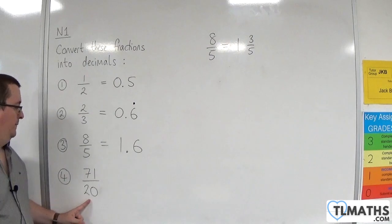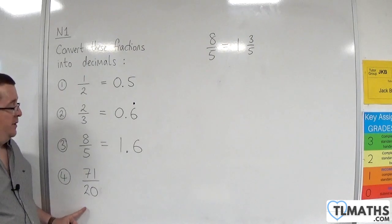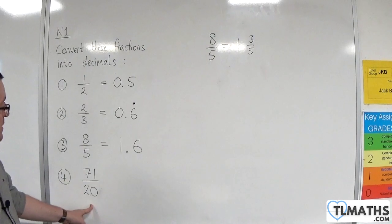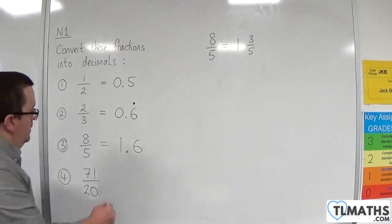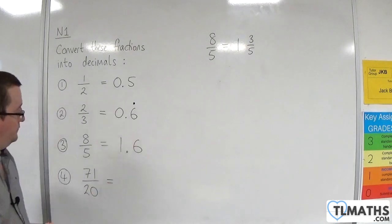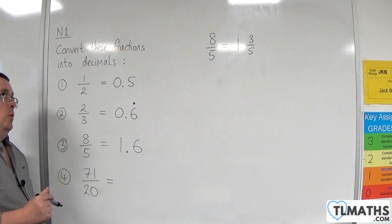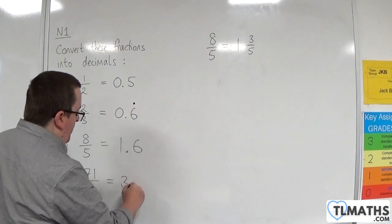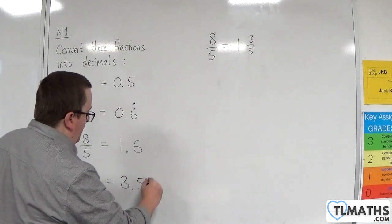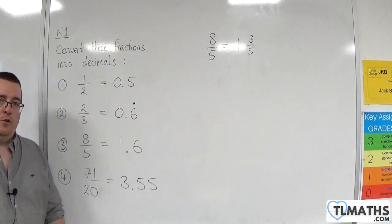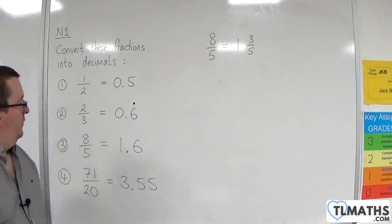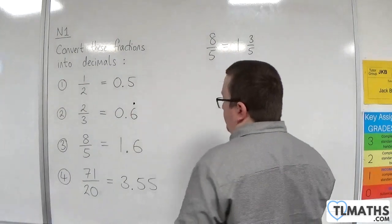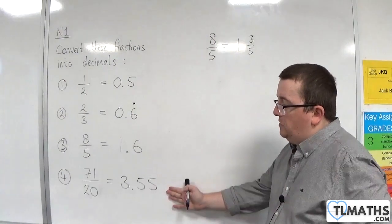Right, last one. 71 over 20. So, 71 divided by 20. So, you should get, what would that be? 35.5, so 3.55. OK? Doing that quickly in my head. So, 3.55. Another terminating decimal there.